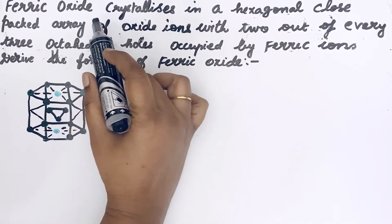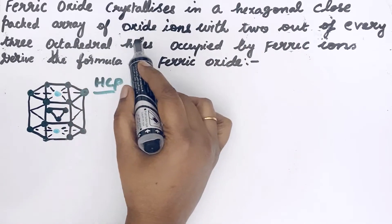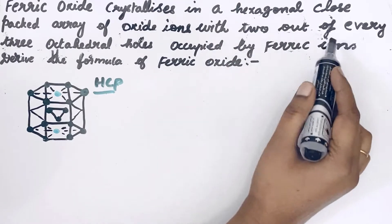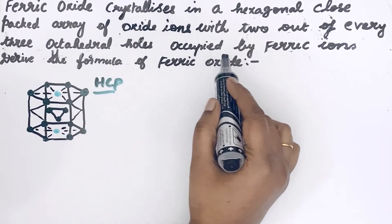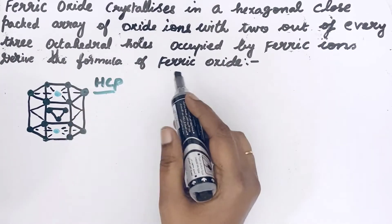Let us see the question first. Ferric oxide crystallizes in a hexagonal close-packed array of oxide ions with two out of every three octahedral holes occupied by ferric ions. Derive the formula of ferric oxide.